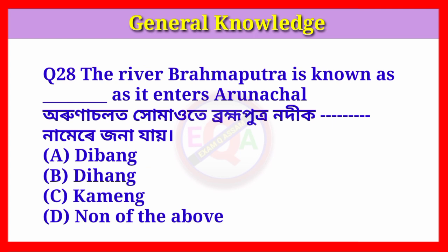Question number twenty-eight: The river Brahmaputra is known as what name as it enters Arunachal Pradesh? Answer: Option B, Dihung.